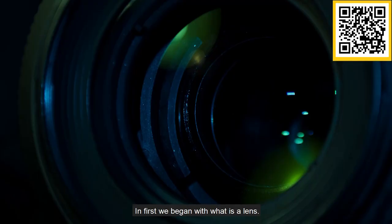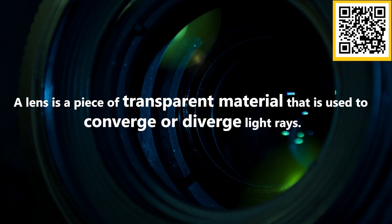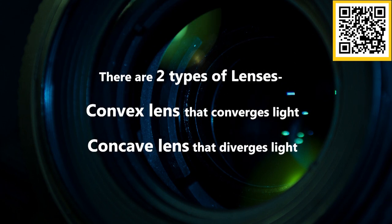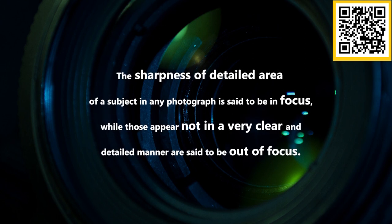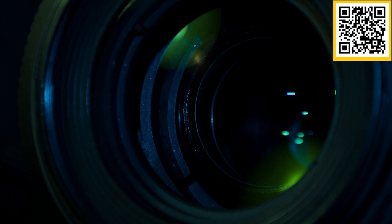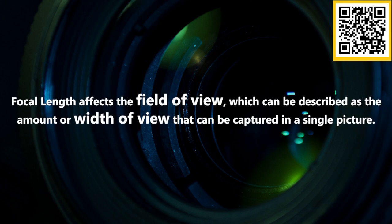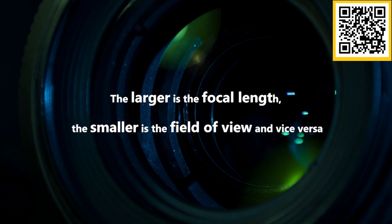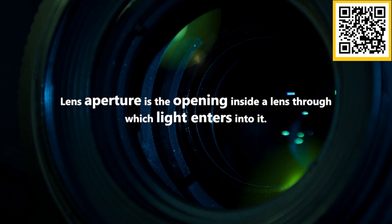In the first part, we began with what a lens is: a piece of transparent material used to converge or diverge light. There are two types — a convex lens that converges light and a concave lens that diverges light. A subject sharply defined in a photograph is said to be in focus; those appearing unclear are out of focus. The focal length of a DSLR lens is the distance between the lens and the subject on which it can have sharp focus. Focal length affects the field of view — the larger the focal length, the smaller the field of view, and vice versa.